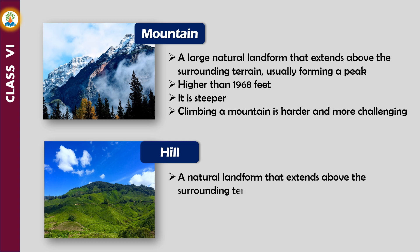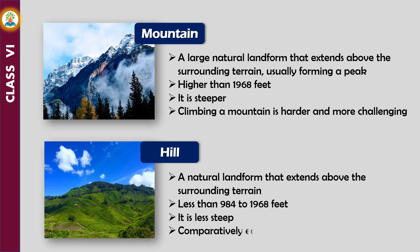A hill is a natural landform that extends above the surrounding terrain, less than 984 to 1,968 feet. It is less steep and comparatively easier to climb.